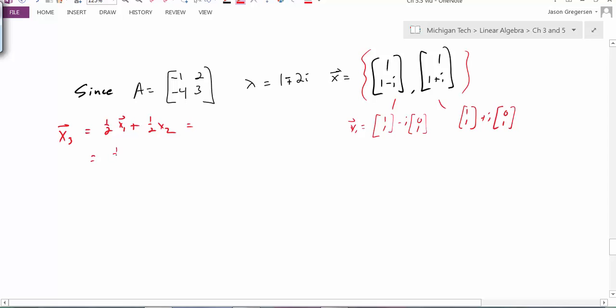I will get 1 half, 1, 1 minus 1 half i, times 0, 1, plus 1 half, 1, 1 plus 1 half i, 0, 1. And when I look at this sum, I know that these two values will cancel out.